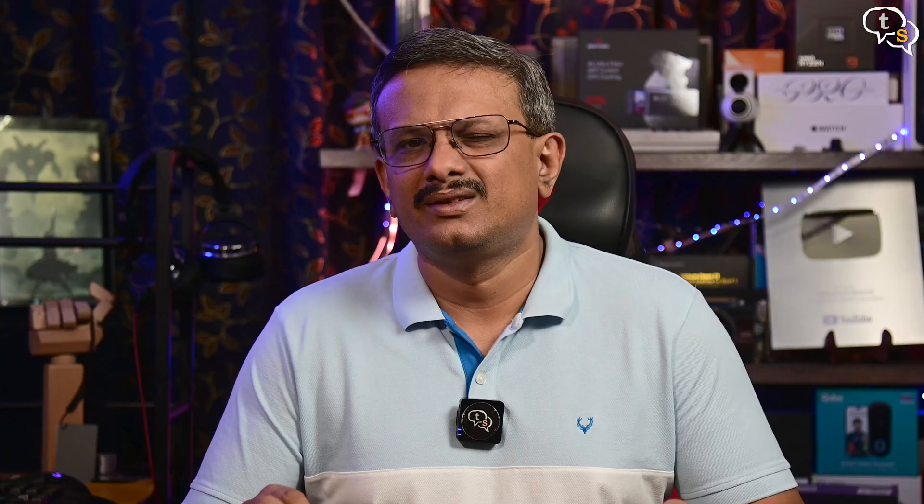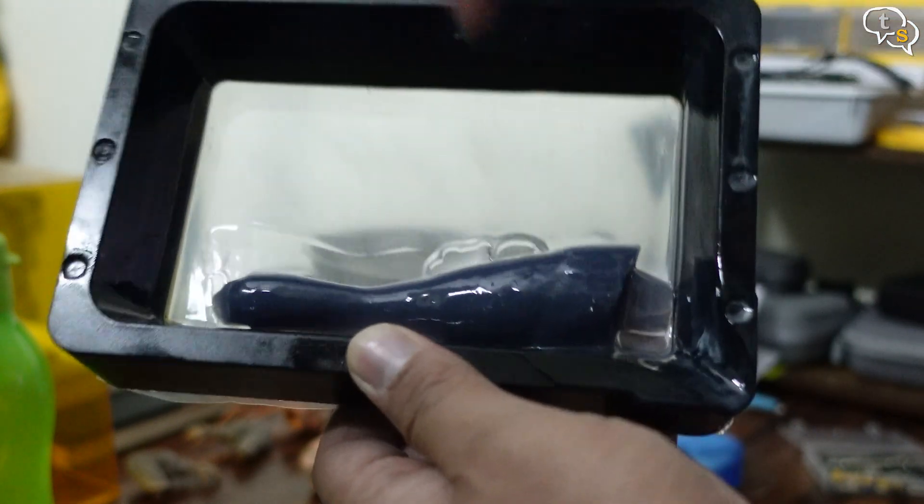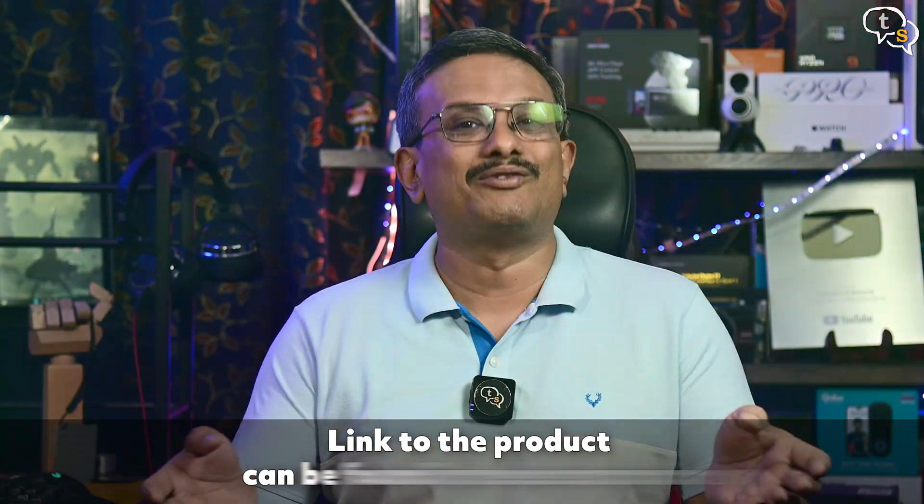No more failed prints, hopefully. If you do have a failed print by chance, remove all the resin from the vat and touch the print from below. It should come off quite easily if the tension on your FEP is right. So that was the video.